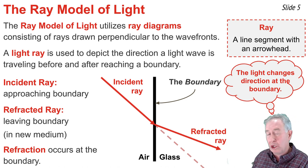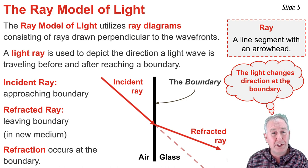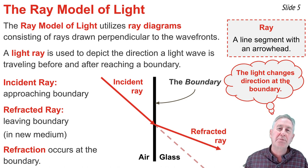That is, instead of the incident ray continuing along its path, shown by this dashed pink line, instead it bends or changes its direction and is represented by the refracted ray. Refraction takes place at the boundary. It's a change in direction of the light as it crosses from one material to another material.